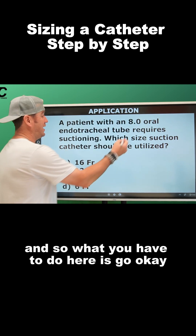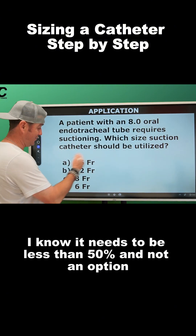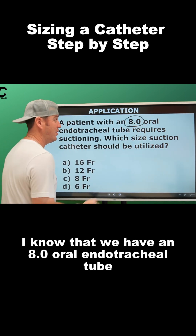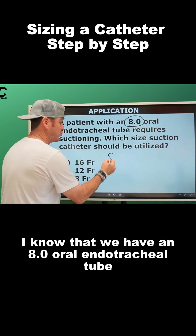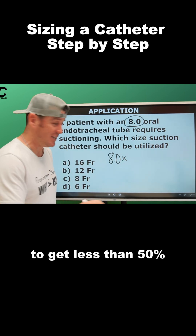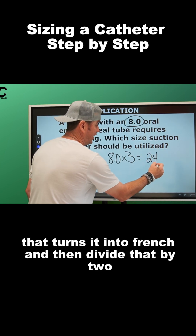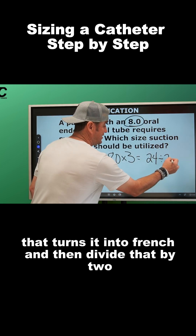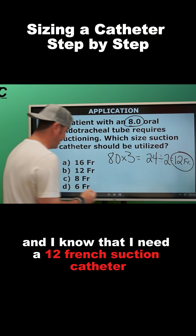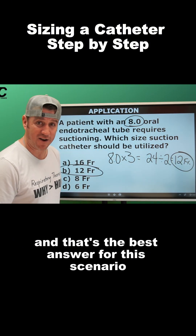What you have to do is: I know it needs to be less than 50%. I know that we have an 8.0 oral endotracheal tube. To get less than 50%, I have to multiply that times three — that converts it to French — and then divide by two. That gives me a 12 French suction catheter, and that's the best answer for this scenario.